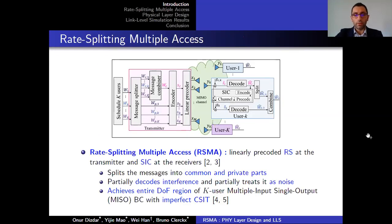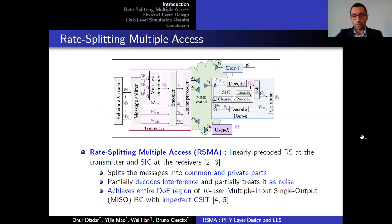A new technology, rate-splitting multiple access (RSMA), relies on linearly precoded rate-splitting at the transmitter and SIC at the receivers. RSMA splits the messages into common and private parts at the transmitter side. Each user partially decodes the interference and partially treats it as noise. It has been shown that RSMA achieves the entire DOF region for K-user MISO broadcast channels with imperfect CSIT.